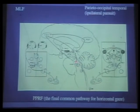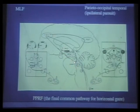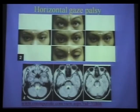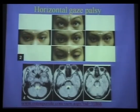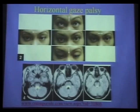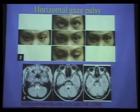Horizontal gaze is in the pons, and the final common pathway is the sixth nerve nucleus and its adjacent parapontine reticular formation. The key thing to know: horizontal gaze is pons, vertical gaze is midbrain at the thalamomesencephalic junction. Here's a patient with a horizontal gaze palsy—they can't look that way in primary position, only a little adduction. Patients sometimes have more than one problem: horizontal gaze palsy and an INO on the same side, or bilateral horizontal gaze palsy and an INO. These processes are not mutually exclusive. A large lesion in the dorsal pons accounts for this.